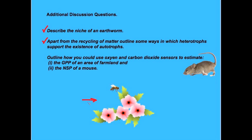For our final questions: describe the niche of an earthworm apart from the recycling of matter; outline some ways in which heterotrophs support the existence of autotrophs; and finally, outline how you could use oxygen and carbon dioxide sensors to estimate the GPP of an area of farmland and also to find the NSP of a mouse.